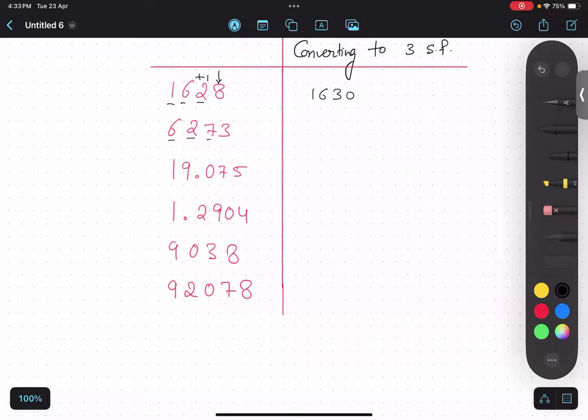Second one. 1, 2, 3. Then focus on this. 6, 2, 7, 0. 6, 2, 7, 0. Very good.